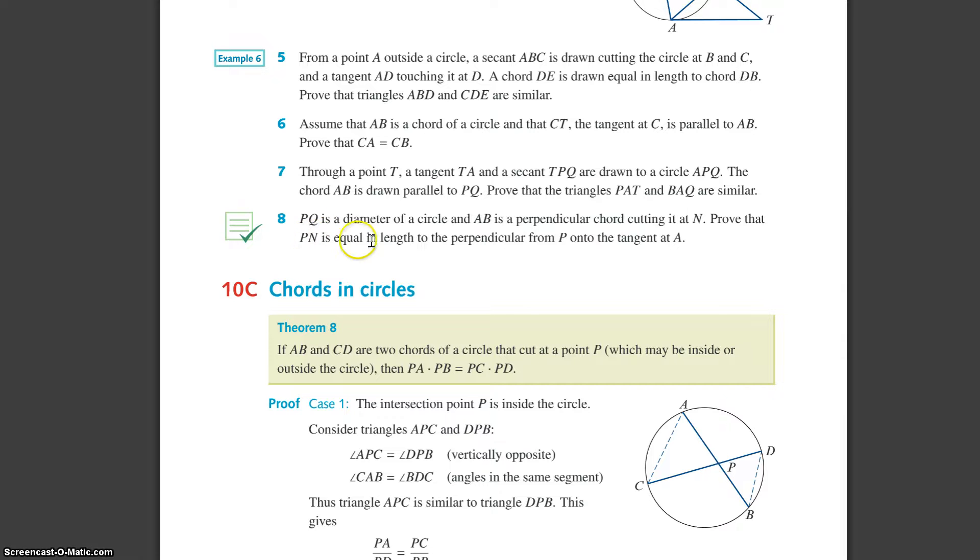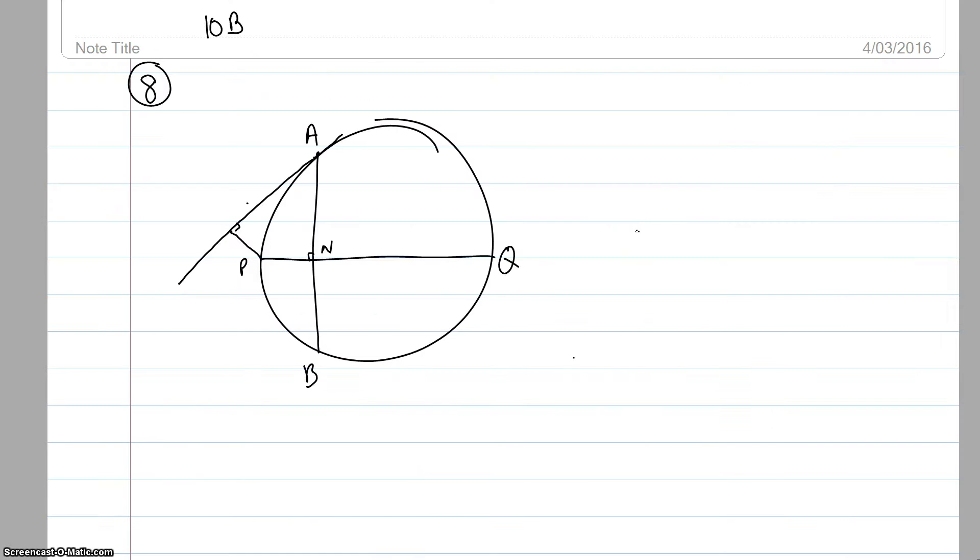Prove that PN is equal in length to the perpendicular from P onto the tangent at A. So basically what they're asking is to prove that this is the same as this. I'm gonna have a go at that now.